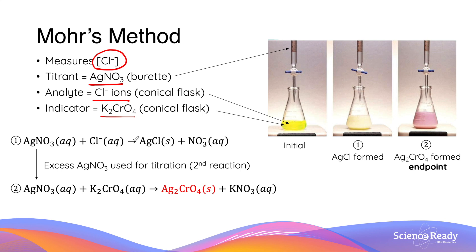When the stopcock of the burette is opened, silver ions react with chloride ions to form a white precipitate, that is silver chloride. This is seen in the conical flask in the second picture in the middle. It is important to add silver nitrate in excess so that all chloride ions in the solution are precipitated. When all chloride ions are reacted, the excess silver ions will start to react with the chromate ions also present in the conical flask. This reaction produces another precipitate, but this time the precipitate has a distinct red color, as you can see in the third picture.